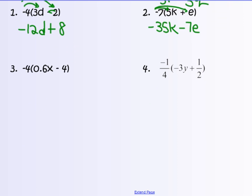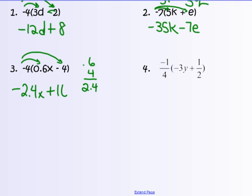Practice number 3: negative 4 times 0.6x gives negative 2.4x — one negative in the product. Negative 4 times negative 4 gives positive 16. Students sometimes see that as a minus sign and get negative 16, then have to change it to add the opposite. It's easier to read it as negative 4, so negative 4 times negative 4 is positive 16.